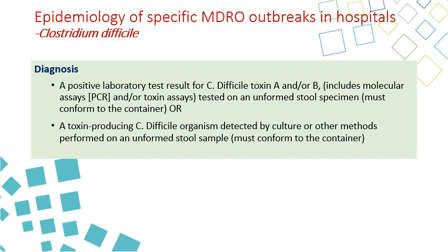Diagnosis is by detecting toxin A or B, or both, using toxin assays or PCR. Alternatively, toxin-producing C. difficile organisms can be detected by culture or other methods performed on unformed stool samples — meaning the patient has diarrhea and stool takes the shape of the container. Formed stool samples are not tested.